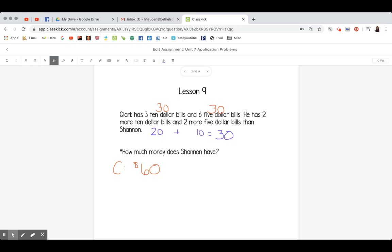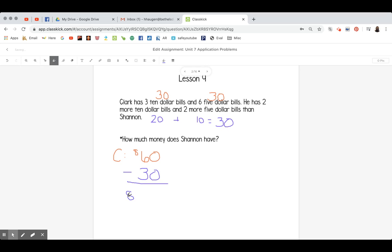So because Clark has more, we subtract to get Shannon's number. So Clark's $60 minus $30 equals Shannon has $30.